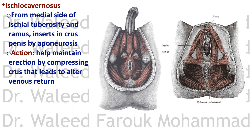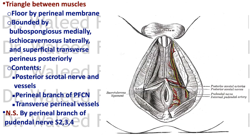The ischiocavernosus muscle covers the crus of the penis on each side. It's attached to the ischiopubic ramus and the conjoined ramus, and inserts into the crus of the penis by an aponeurosis. It maintains erection by compressing the crus, leading to impedance of venous return from the penis.